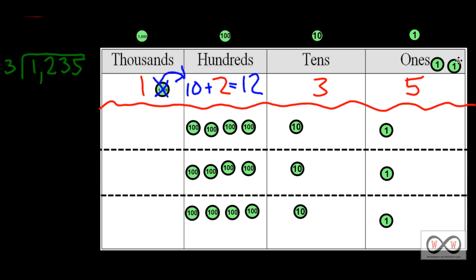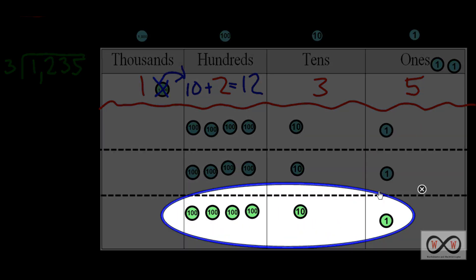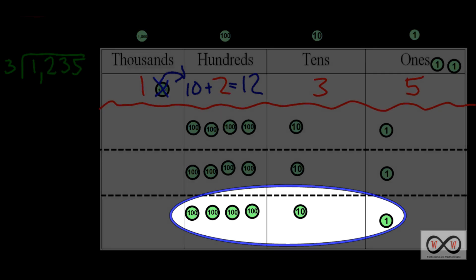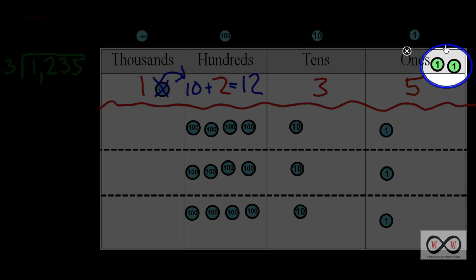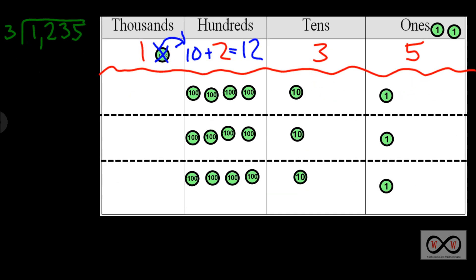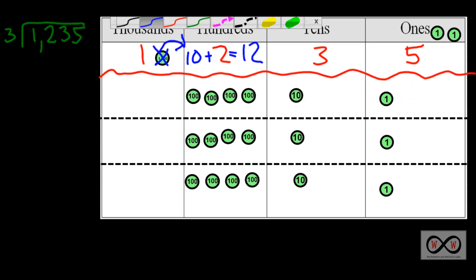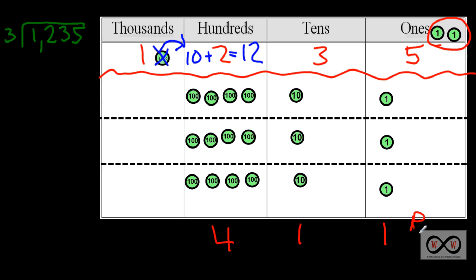So if you have 1,235 and you divide it into three equal groups, you have four hundreds, one ten, and one one — being 411. And this remainder over here: we have two left over, a remainder of two. When we write our quotient, we have 411 with a remainder of two. We'll represent that with a capital letter R and the digit two: 411 remainder 2.